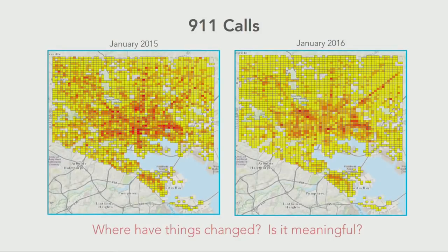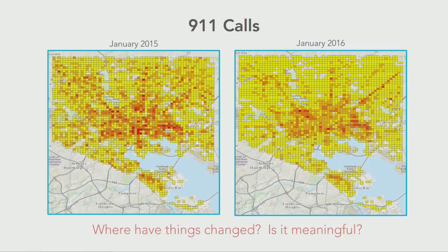There are a couple of ways people traditionally incorporate time — perfectly valid ways. One is snapshot analysis. Here we're looking at snapshots, one in January 2015 and one in January 2016, looking at 911 calls in Baltimore. We can look at these two maps side by side, maybe run a hotspot analysis on the 2015 data and one on 2016. But this kind of snapshot analysis really makes these things independent — it's like doing a time selection first and then just doing a traditional spatial analysis. We're not really integrating time into the story.